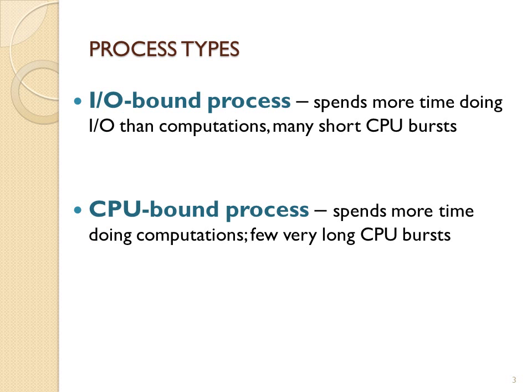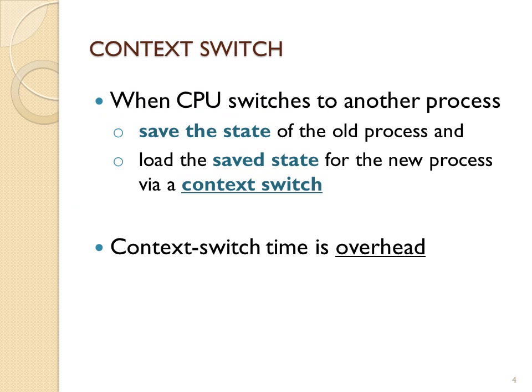CPU-bound processes are those processes that spend more time on the CPU, and IO-bound processes are those processes that spend less time on the CPU and more time doing IO.